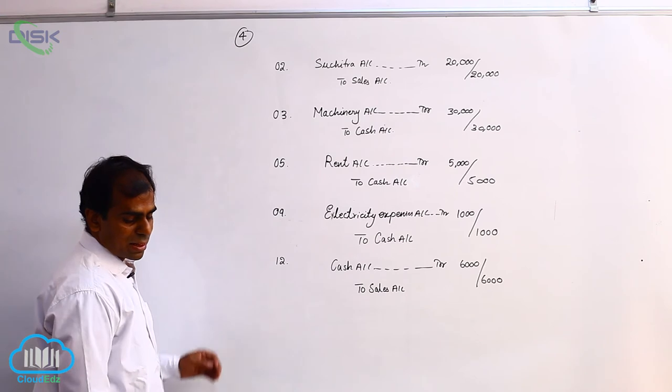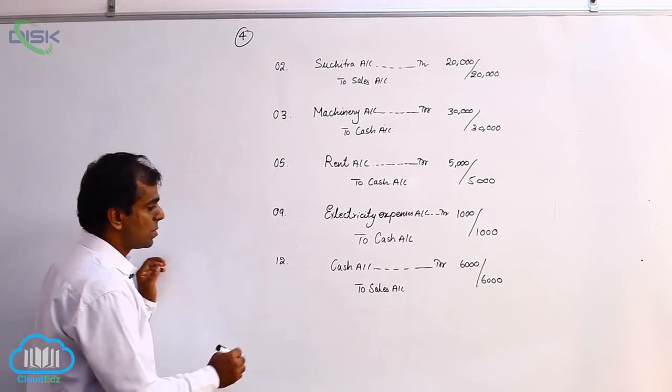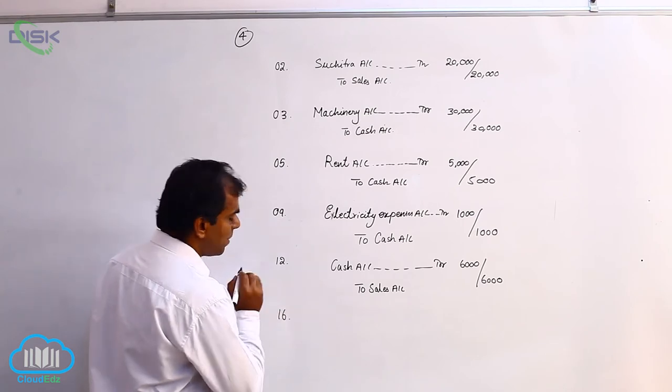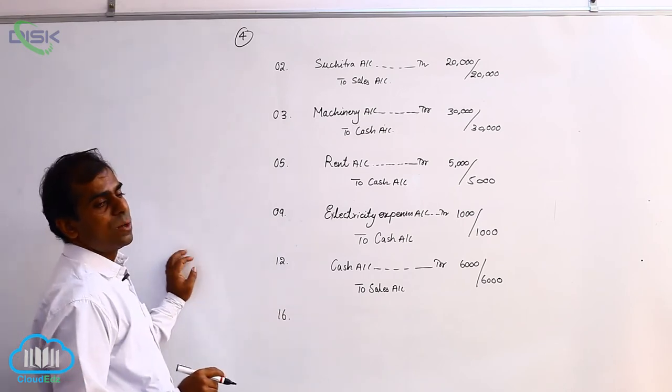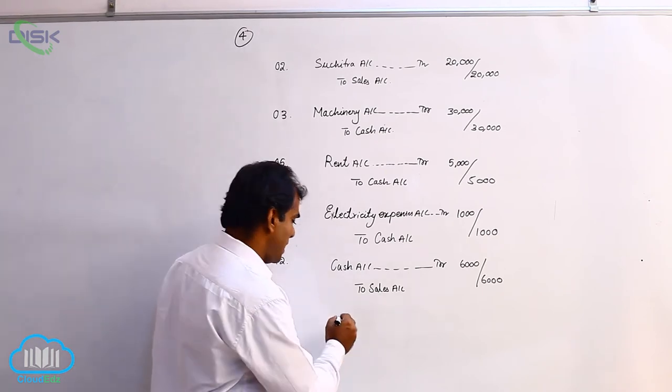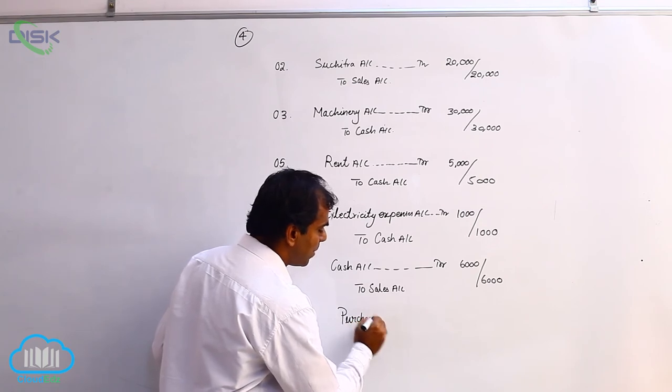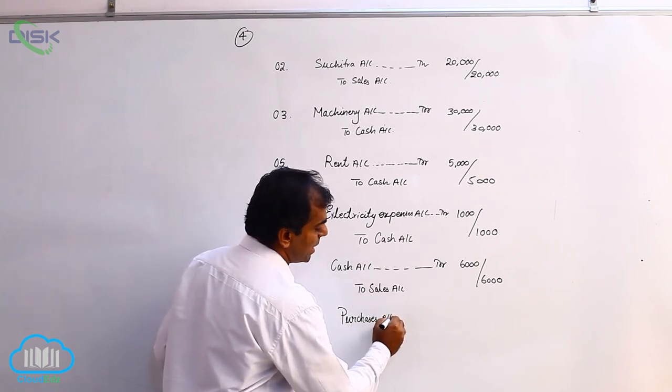Now, coming to fifteenth, bought goods on credit from Nickel. So, it is goods purchased on credit. So, goods are coming in because you are buying. So, therefore, real account rule is applied and purchases account is debited.